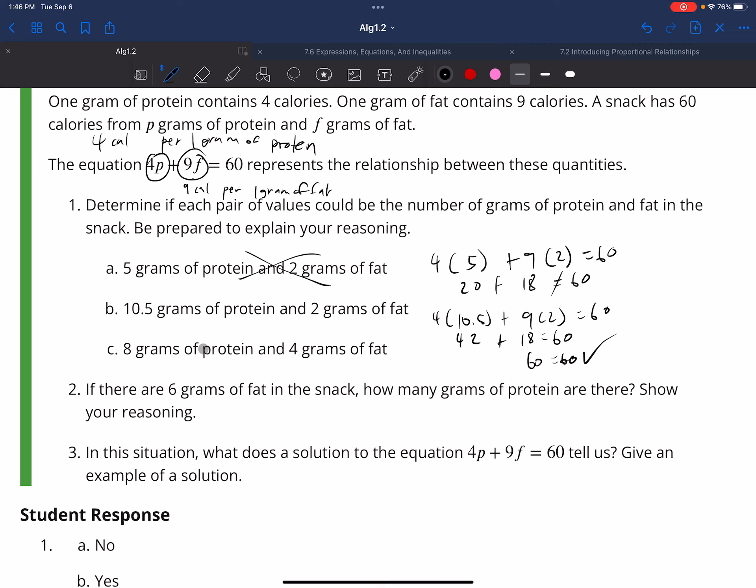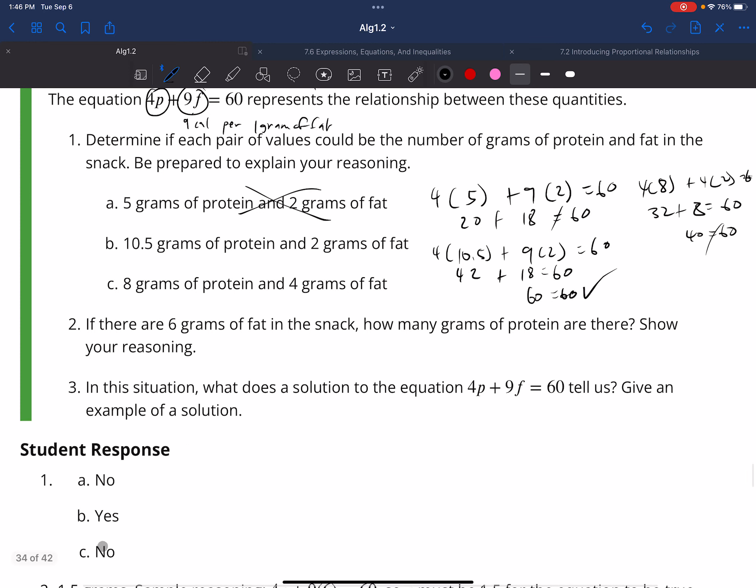If I have 8 grams of protein, so I do 4 times 8 grams of protein plus 4 grams of fat equals 60. That's 32 plus 8 equals 60. This does not equal 60, therefore it is not. No, yes, no.